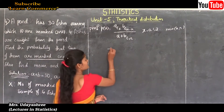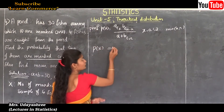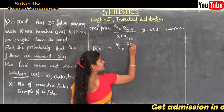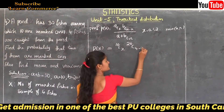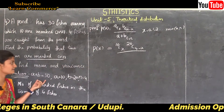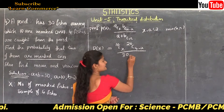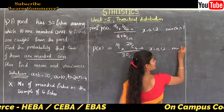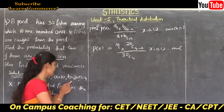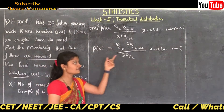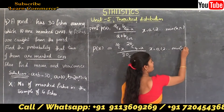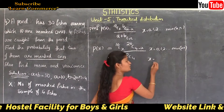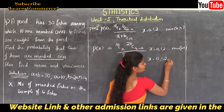Substituting the values into the formula: P of x equals 10 C x times 20 C (4 minus x), divided by 30 C 4. Here x takes values 0, 1, 2, and so on up to the minimum of a and n. Since a is 10 and n is 4, the minimum is 4, so x ranges over 0, 1, 2, 3, and 4.